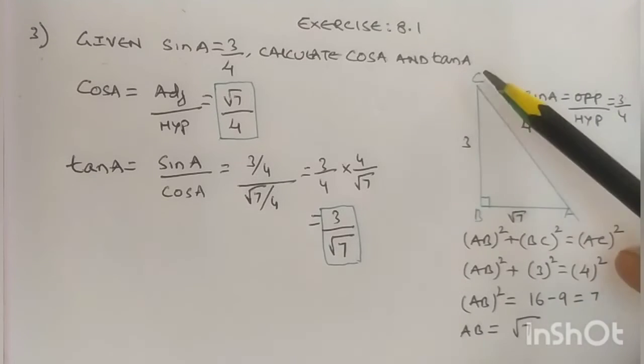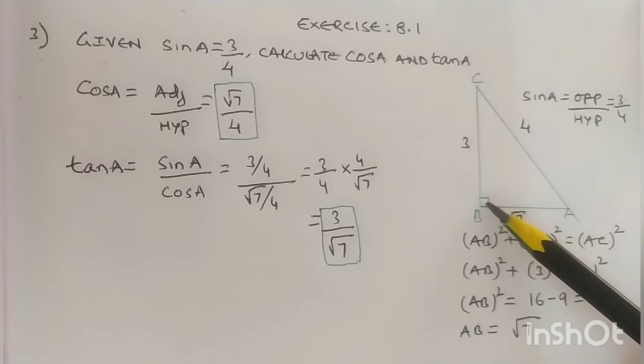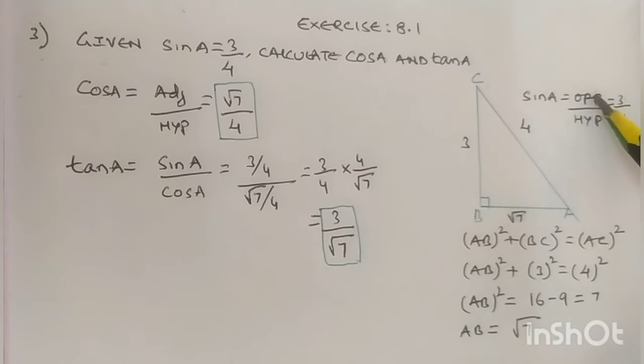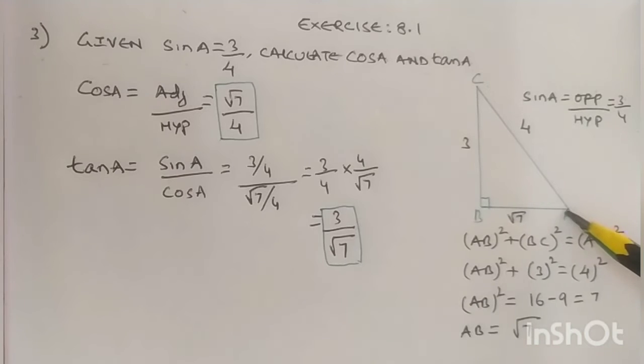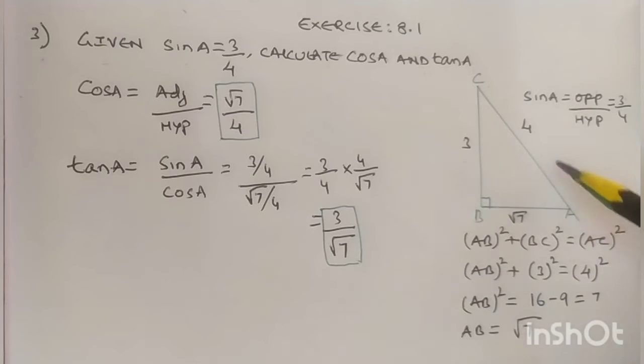In triangle ABC, angle B is a right angle. The opposite of sine A is BC, so BC equals 3.